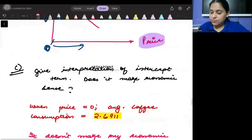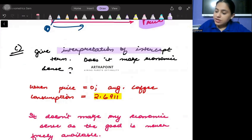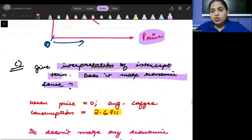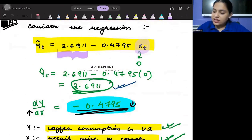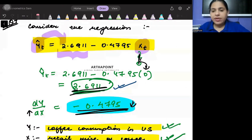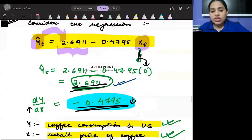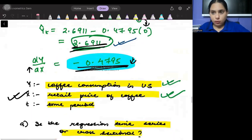Now the next question: give the interpretation of the intercept term. Does it make any economic sense? For the intercept term, it's pretty simple. When you plug X as 0, the value you get becomes the intercept. So in this case, I'm plugging X as 0 and getting my intercept, where X represents the retail price of coffee.